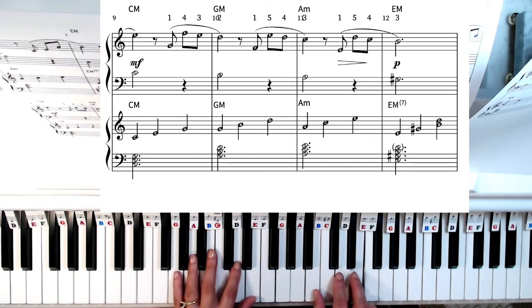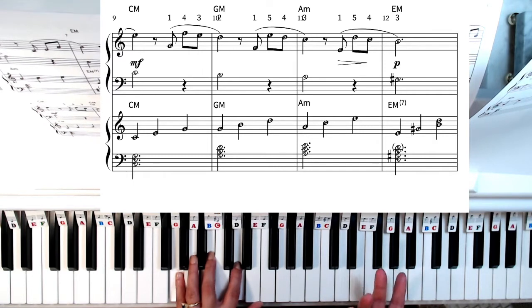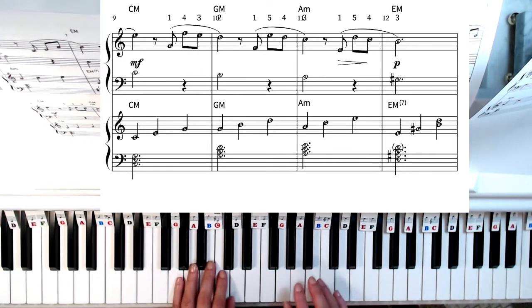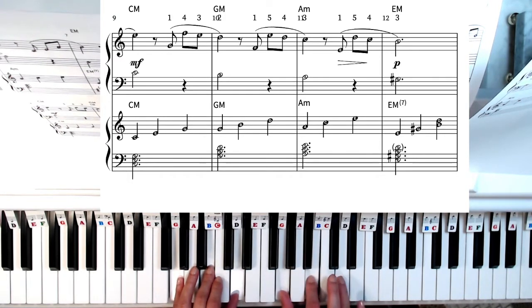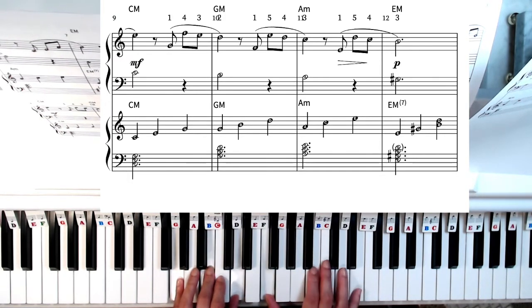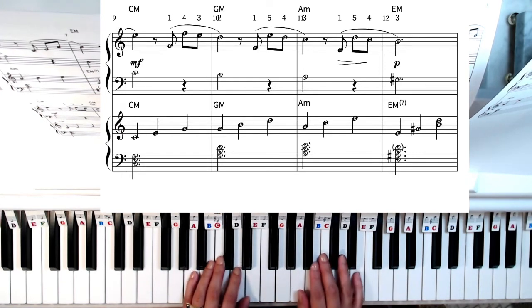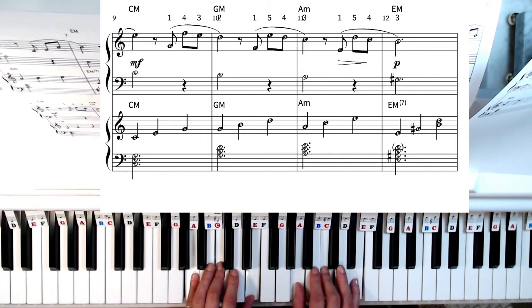Now we're going to play a G major chord or you can play it as a G seventh because the melody has the F. So the notes in the G major chord are G, B, and D. Now we're going back to that very familiar A minor chord. So A, C, and E.